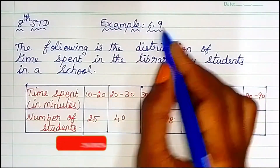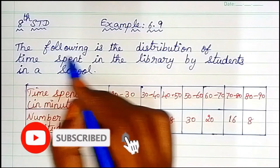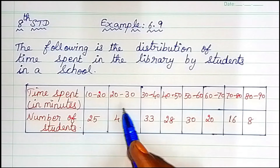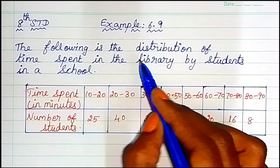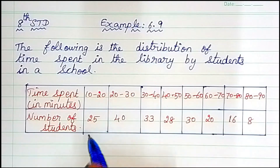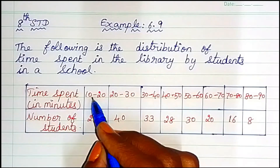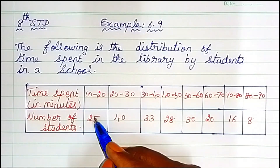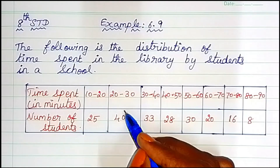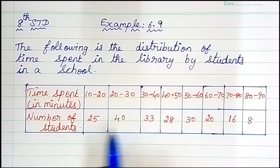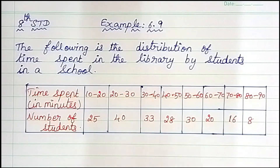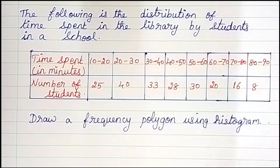Hello children. In example 6.9, the following is the distribution of time spent in the library by students in a school. So, one school's students — how much time they spend in the library — and we collect data. First: 10 to 20 minutes, 25 students spend 20 to 30 minutes, 40 students spend. So the intervals are 10 to 20, 20 to 30.